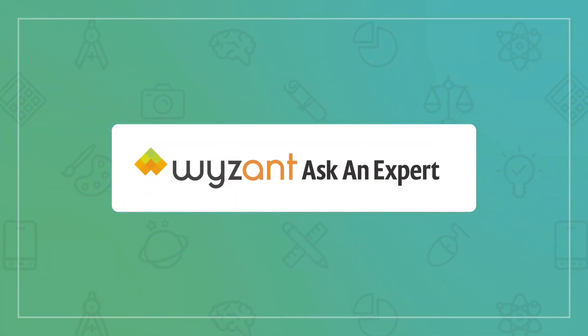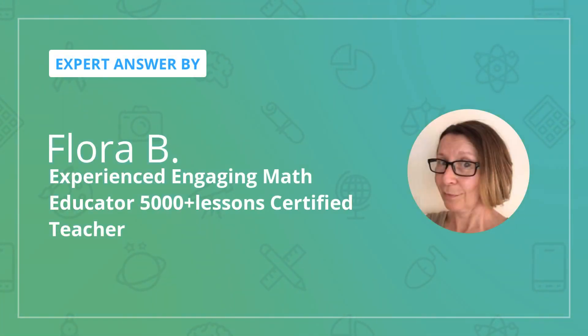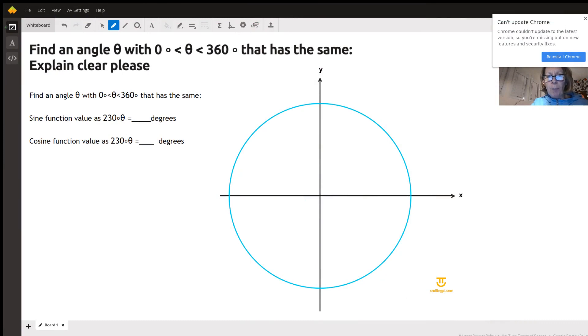We have a trigonometry question here, easily answered with the unit circle. Find an angle theta with theta between 0 and 360 degrees that has the same sine function as the sine of 230 degrees and the same cosine function as the cosine of 230 degrees. When we are measuring angles, we always start with their initial position here, and in math we go counterclockwise.